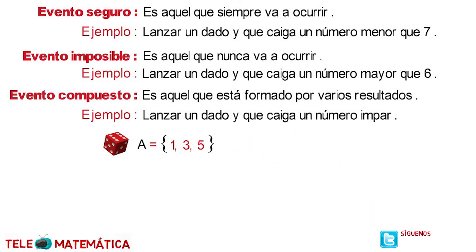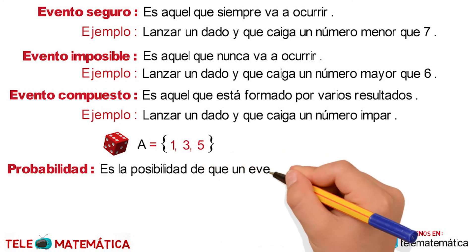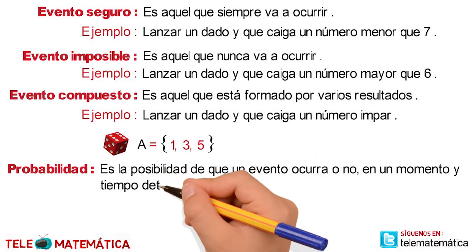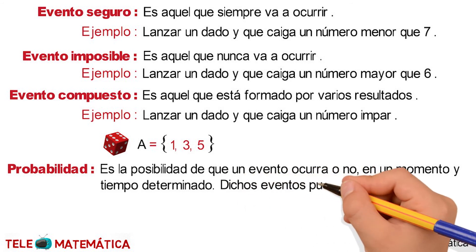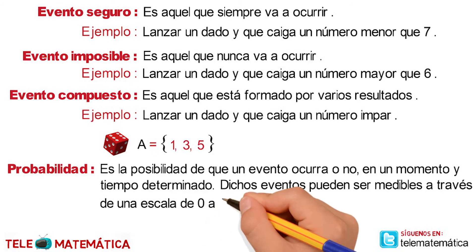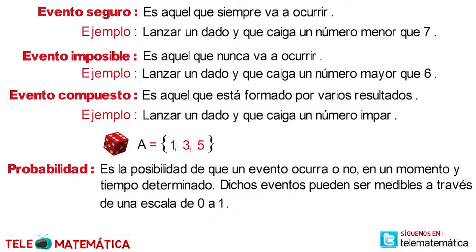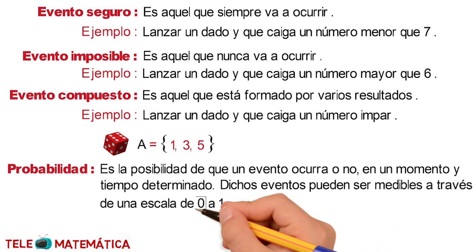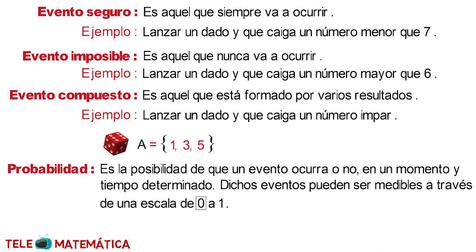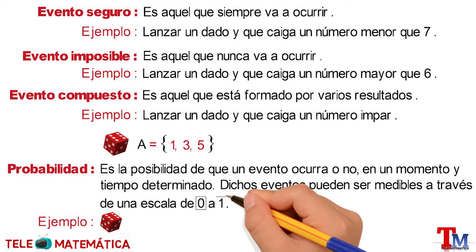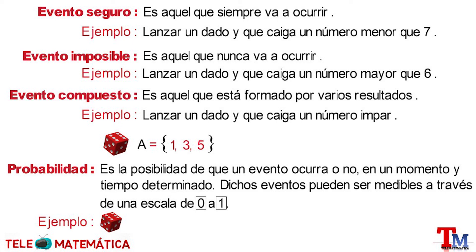Y como último concepto básico que veremos: probabilidad, que se define como la posibilidad de que un evento ocurra o no en un momento y tiempo determinado. Dichos eventos pueden ser medibles a través de una escala de cero a uno. Donde el evento que no pueda ocurrir tiene una probabilidad de cero, es decir, un evento imposible; por ejemplo, que al lanzar un dado caiga un número mayor que seis. Y un evento que ocurra con certeza es de uno, es decir, un evento seguro; por ejemplo, que al lanzar un dado caiga un número menor que siete.